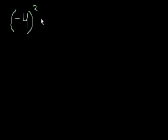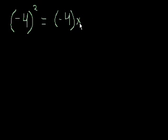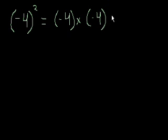If I were to tell you negative 4 squared, that's the same thing as negative 4 times negative 4. We learned from multiplying negative numbers that a negative times a negative is a positive. And then it's 4 times 4, which equals positive 16.